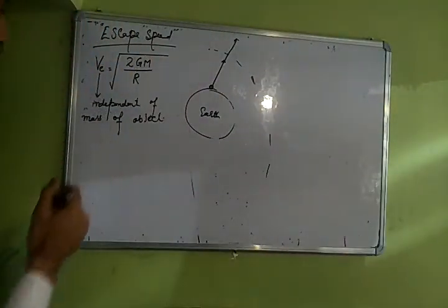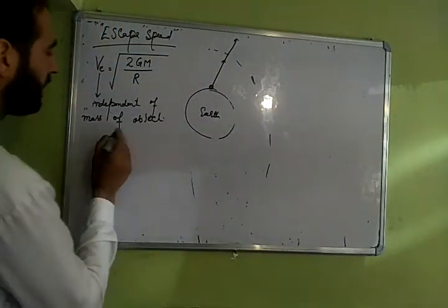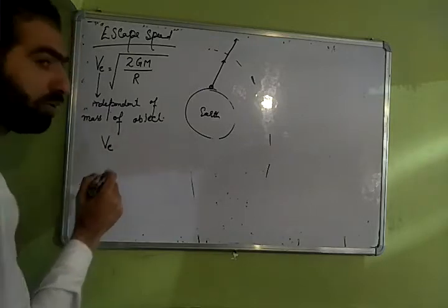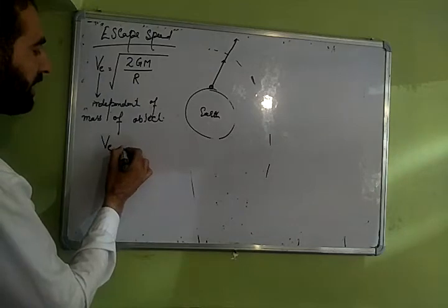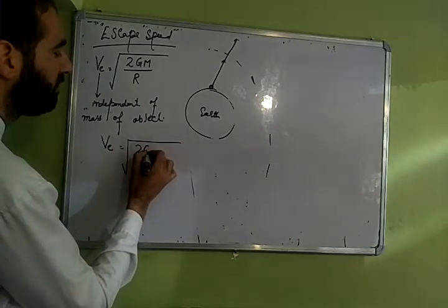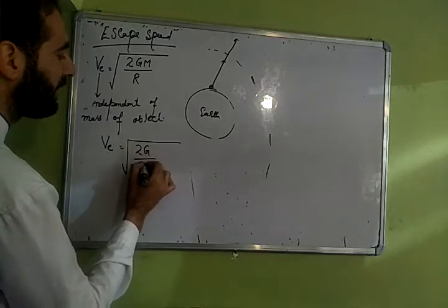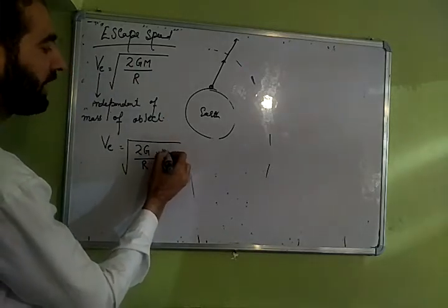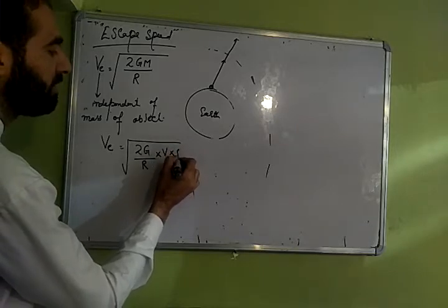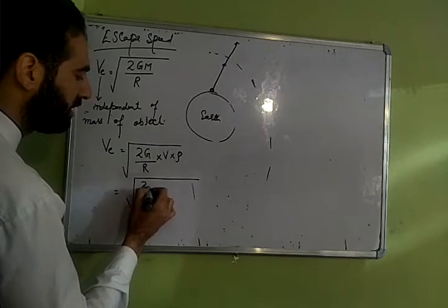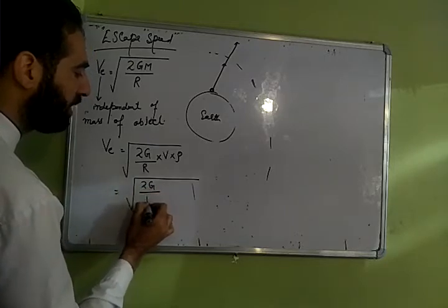The main important thing regarding this escape speed is that ye jo escape speed hai hum isko density me bhi likh sakti hai, kaise likh hogi root of twice g divided by r, ye aise rakho mass ko convert karo density me. Mass you can write as volume into density and you know when you take earth as a perfect sphere then it will be like this 2g by r.